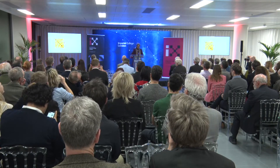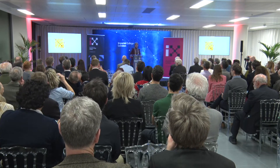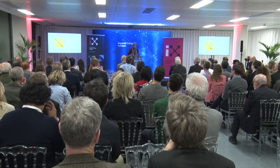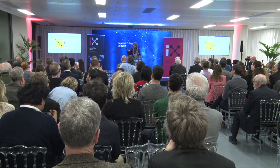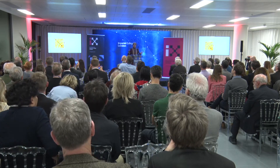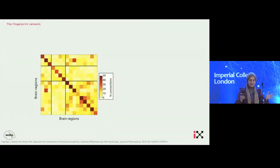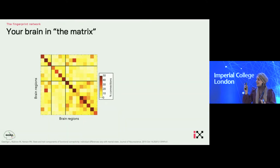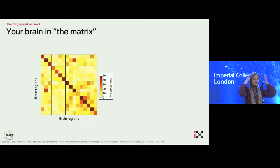I've always been fascinated by the human brain, which is a highly complex interconnected system. As you can see here, the brain can be modeled or represented as a matrix. Your brain — literally the matrix — is your neural fingerprint. This beautiful matrix encodes the relationship between different anatomical regions in the brain.